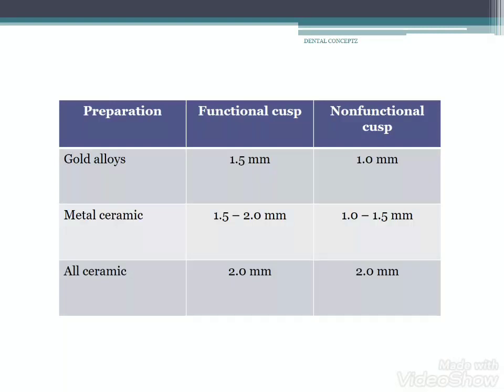For a gold alloy crown, functional cusp reduction should be 1.5 mm and non-functional cusp reduction should be 1 mm. For metal-ceramic restorations, 1.5–2 mm reduction of the functional cusp and 1–1.5 mm reduction of the non-functional cusp should be done. For all-ceramic restorations, an overall reduction of 2 mm is required.